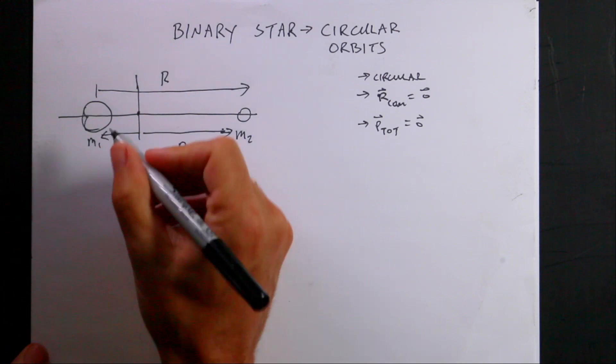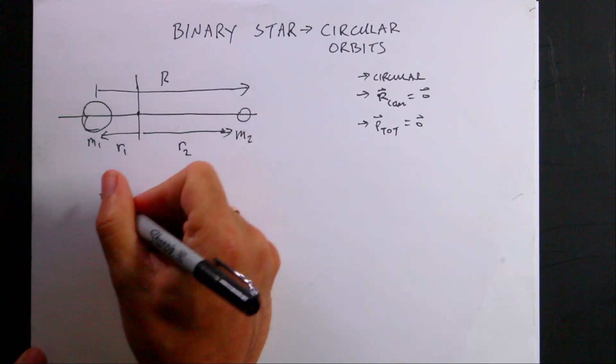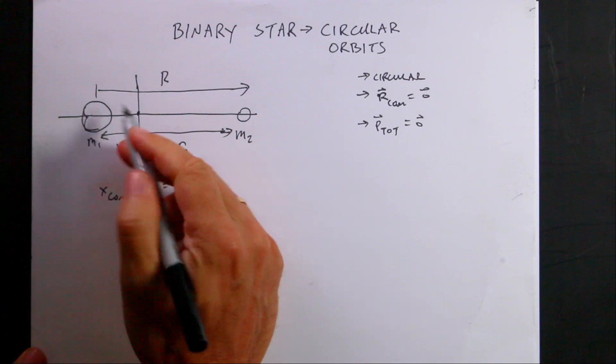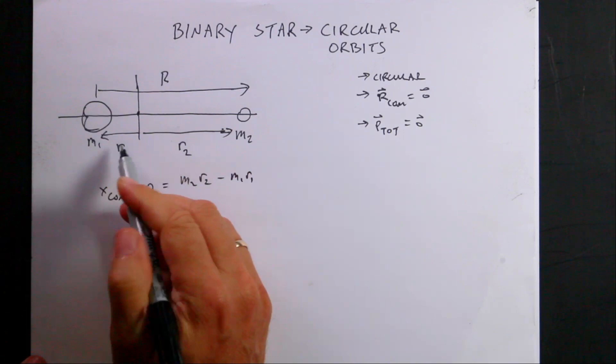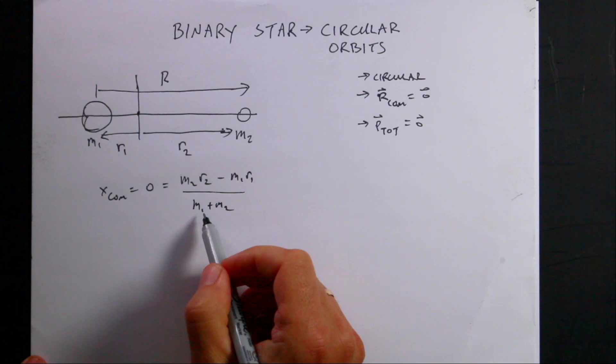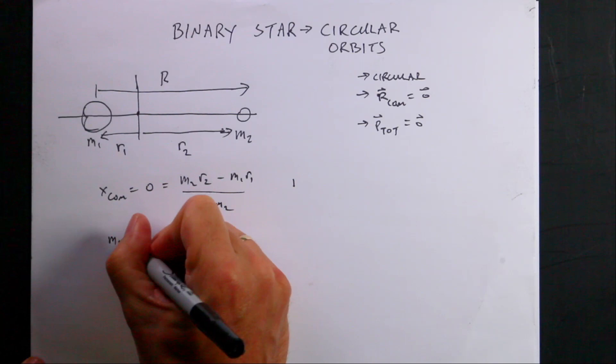Let's start off with the center of mass. The center of mass in the x direction: I want x-center-of-mass to be zero. That's going to be M2·R2, plus the other one which is in the negative x direction, so negative M1·R1 — remember R1 and R2 are positive values — all divided by the total mass M1 plus M2. Multiplying both sides by M1 plus M2, I get M2·R2 equals M1·R1.